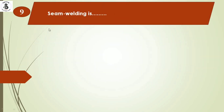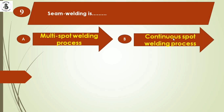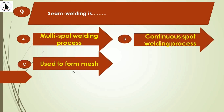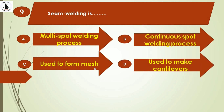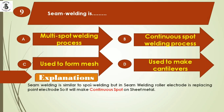Next question: seam welding is — option A: multi-spot welding process, option B: continuous spot welding process, option C: used to form mass, option D: used to form cantilevers. Seam welding is similar to spot welding but uses roller electrodes replacing point electrodes, making continuous spots on sheet metal. So the right answer is option B.